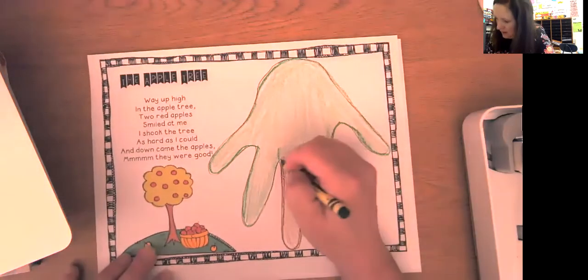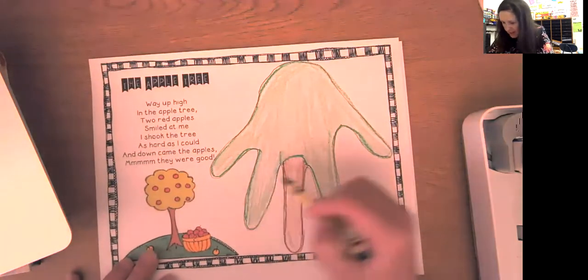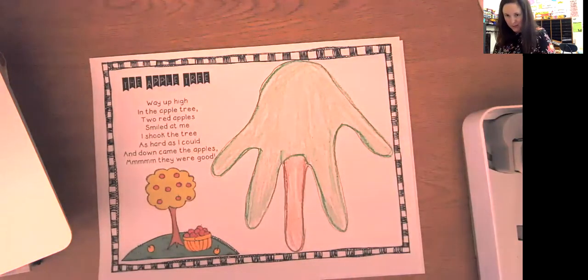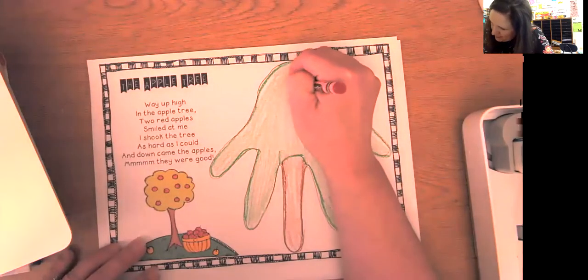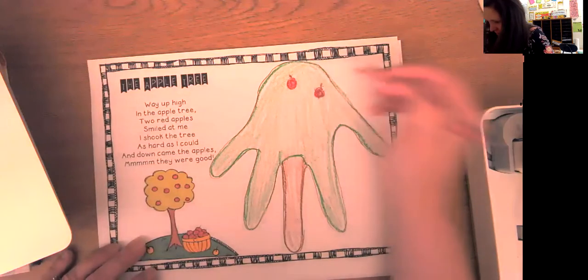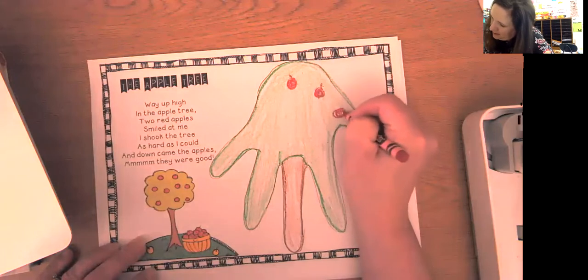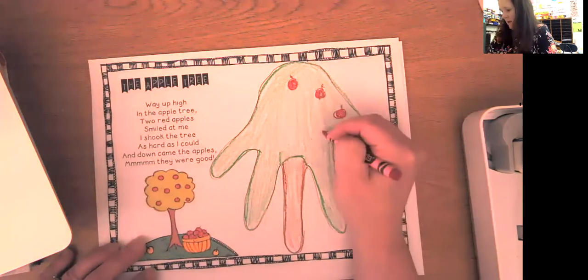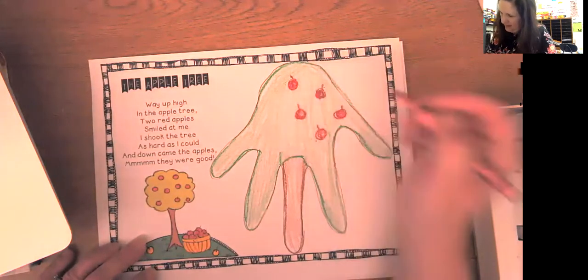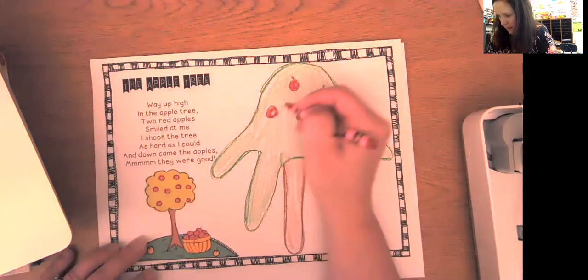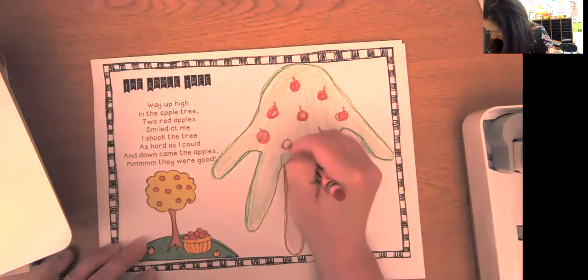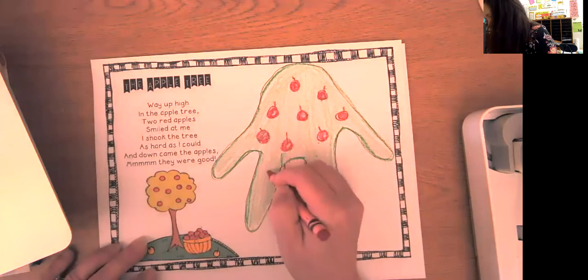So this right here, green part, right? And then that is the trunk. And then we want to add some apples to it because it's an apple tree. We celebrate Johnny Appleseed's birthday in September. So this is another reason why we put for September an apple tree. So, using your red, just different spots, go ahead and give it some apples. And then you're all finished.